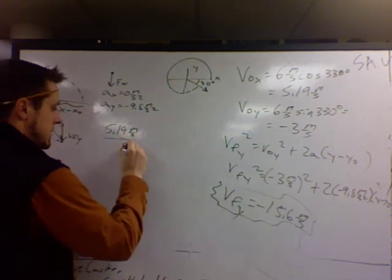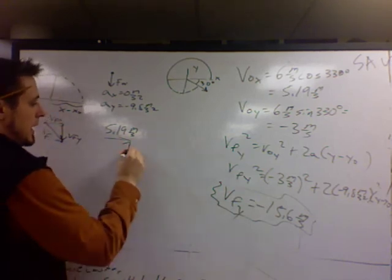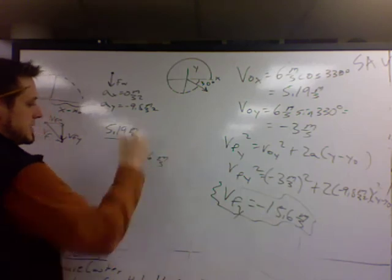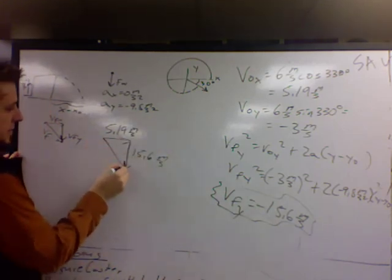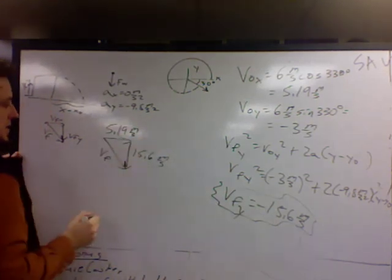And v final y is 15.6 meters per second down. Tail to tip, we're looking for this. Now it's the Pythagorean theorem.